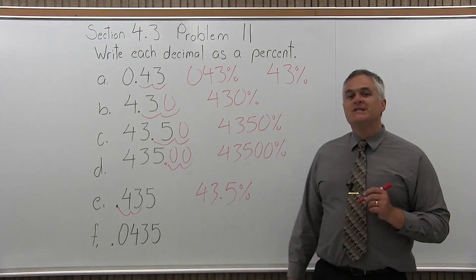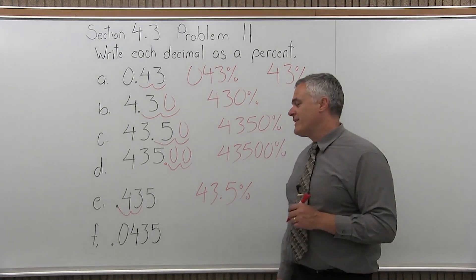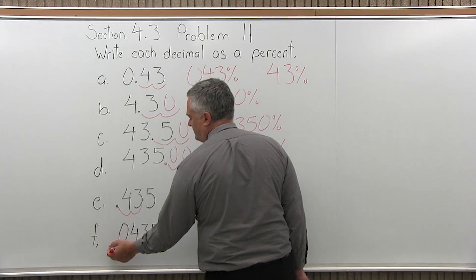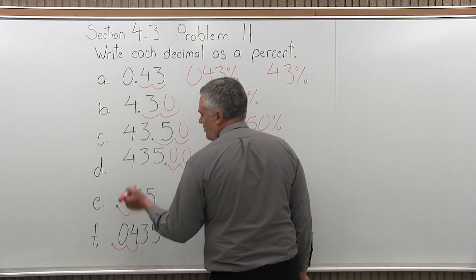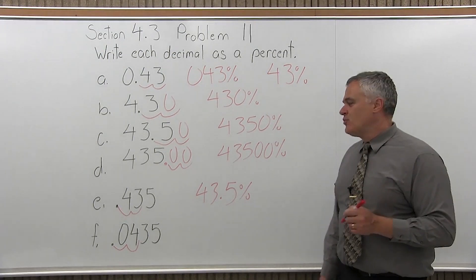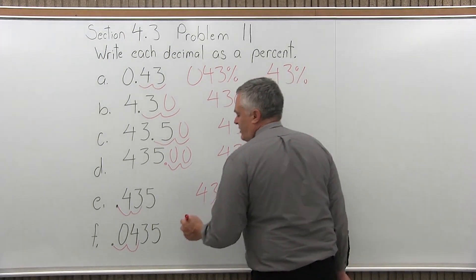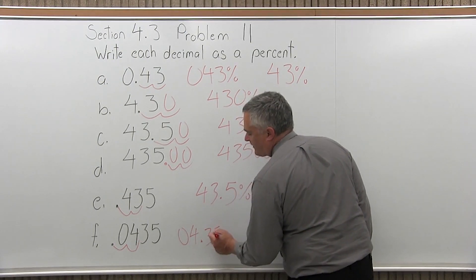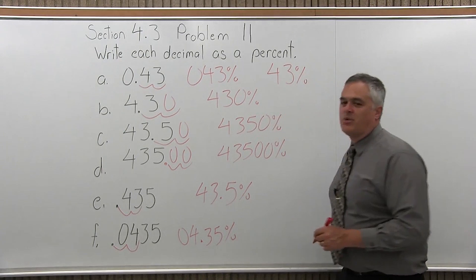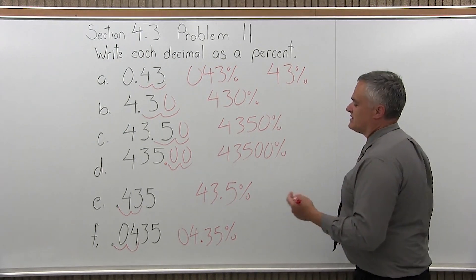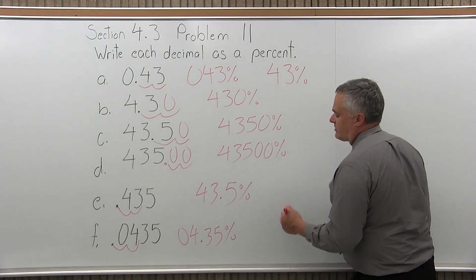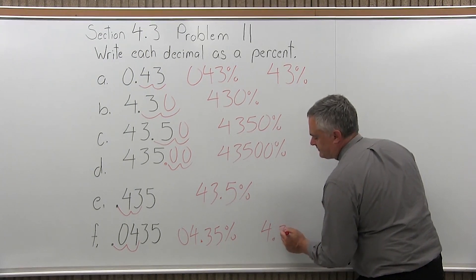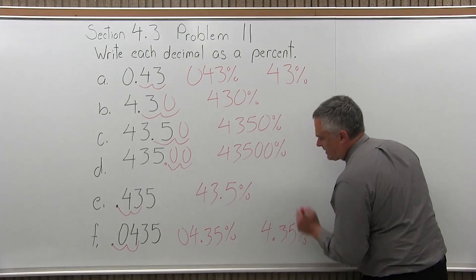Finally, Part F, 0.0435, write that as a percent. Take the decimal where it's written, to the left of the zero, and move it two positions to the right, which puts it between the four and the three. You get 04.35 percent, but that leading zero, nobody would really bother to write that. So you would just write 4.35 percent.